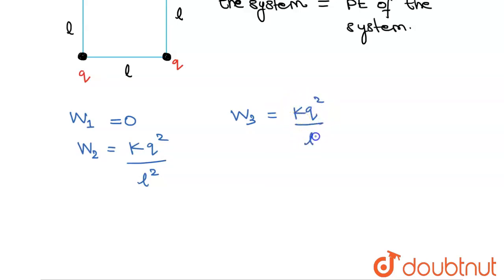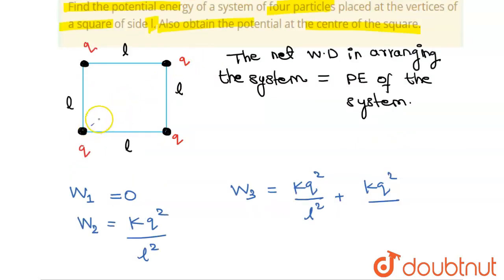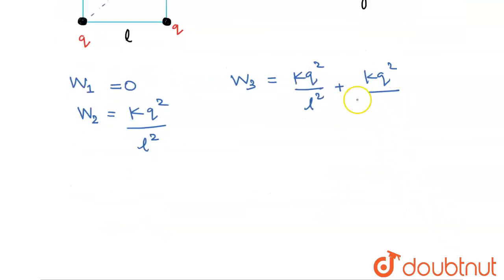Now work done for the third charge, W3, is equals to k q squared over L squared plus k q squared over root 2 L, because the diagonal is root 2 L squared. Now W4, this will be k q squared over L squared plus k q squared over L squared plus k q squared over root 2 L whole squared.